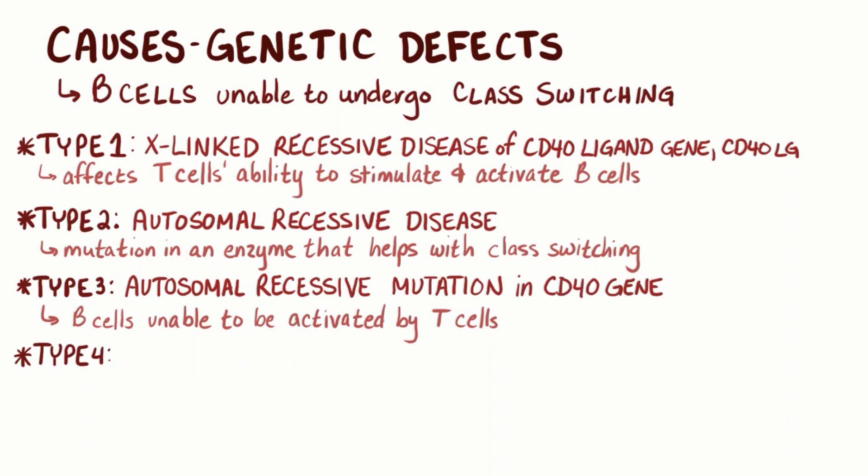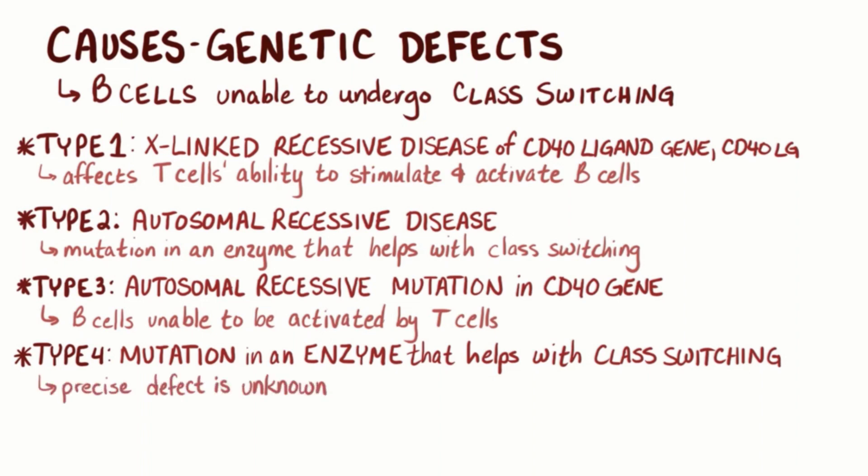Type 4 is again thought to be related to a mutation in an enzyme that helps with class switching in the B-cells, but the exact defect here is unknown. Lastly, there is type 5, which is once again caused by a mutation in an enzyme involved in B-cells class switching.